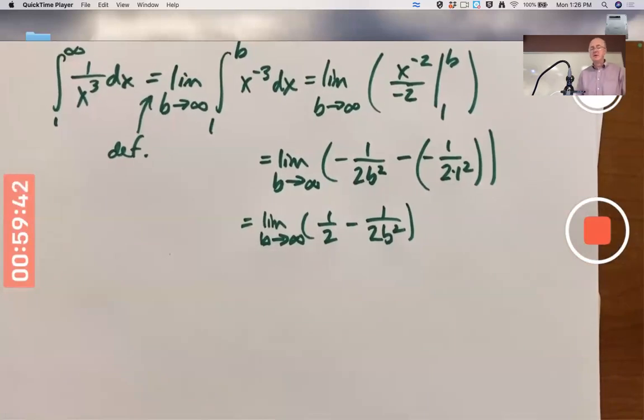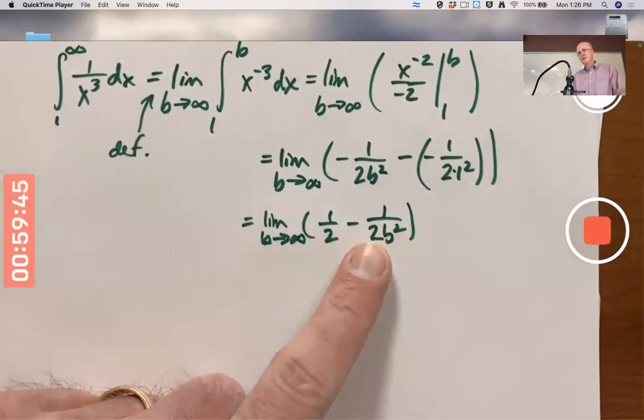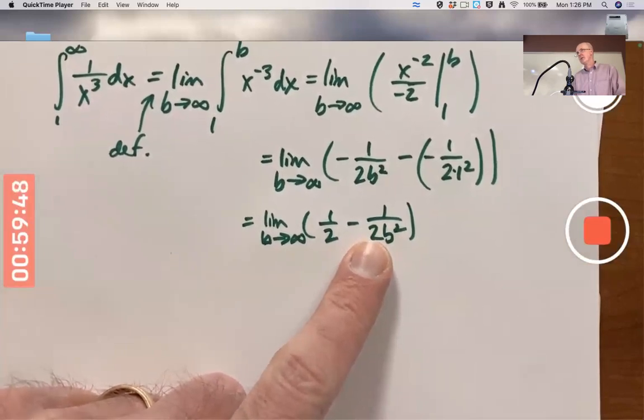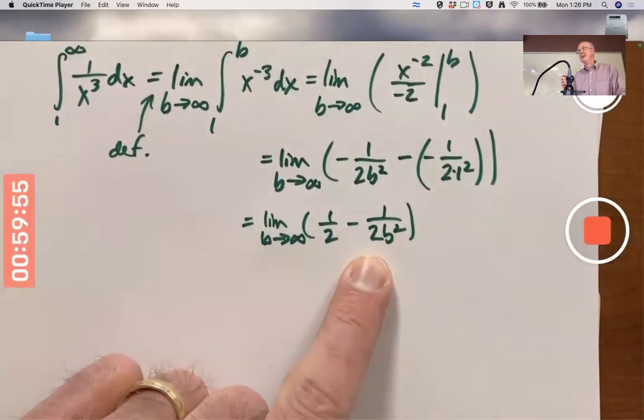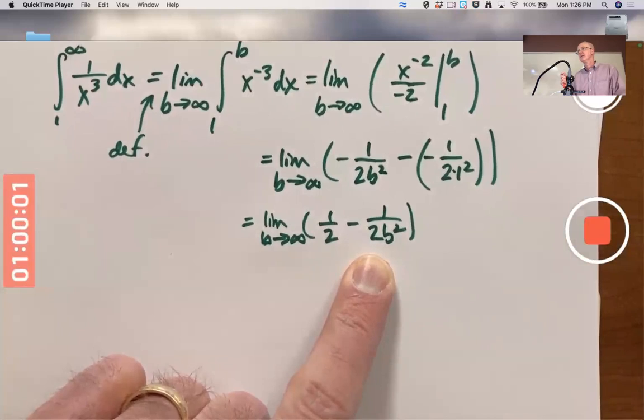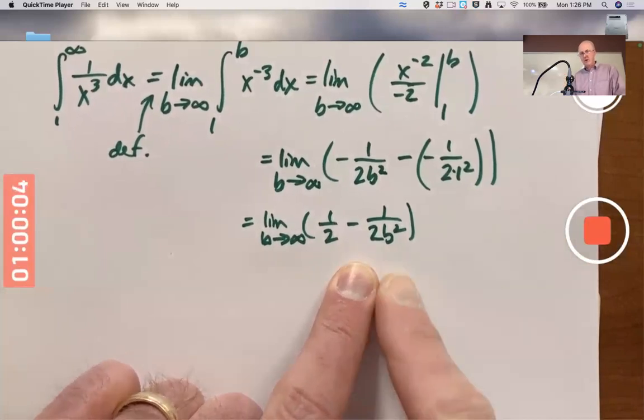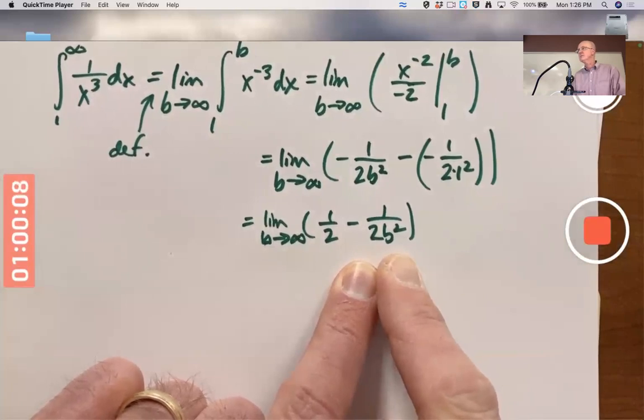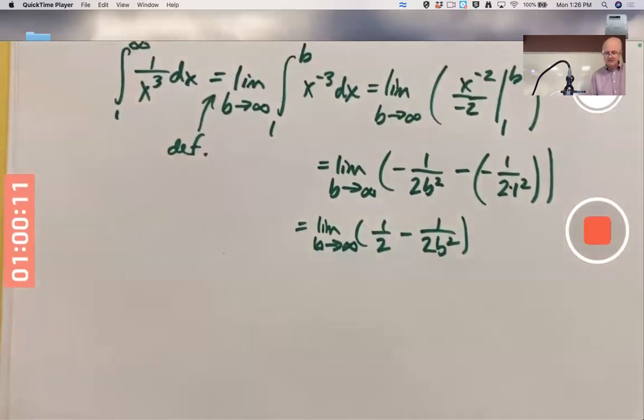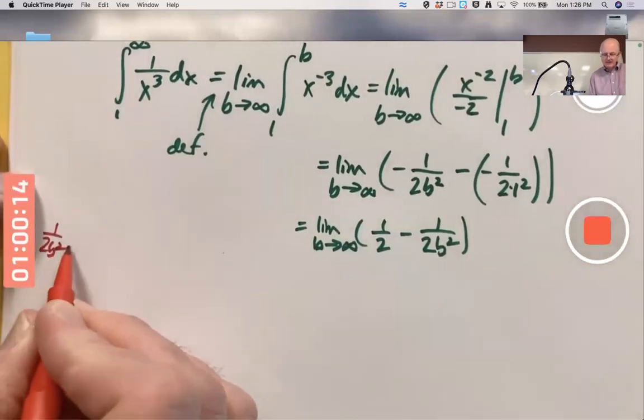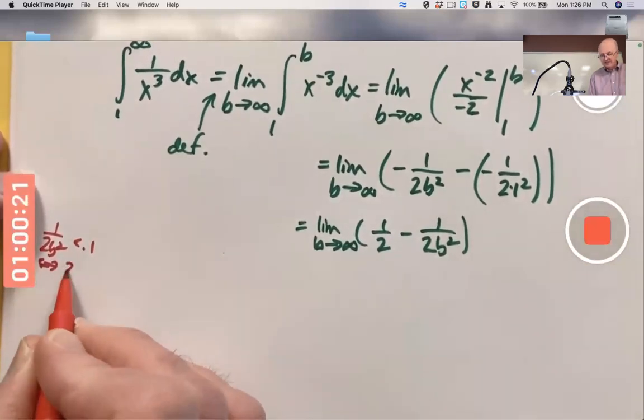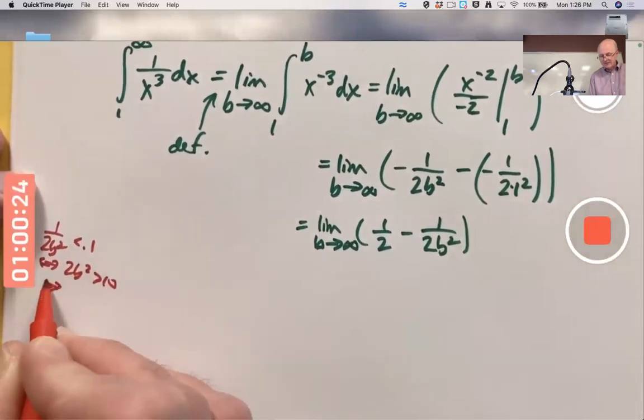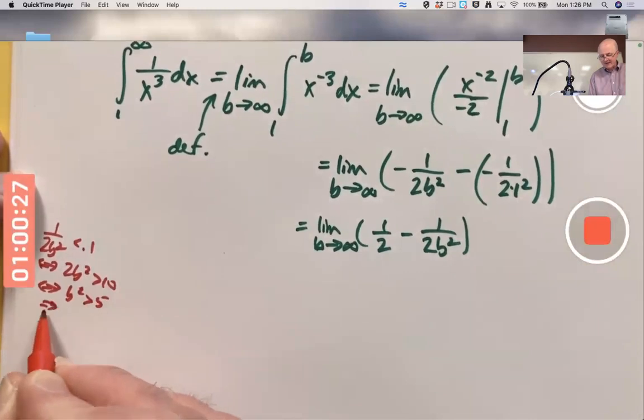And as b goes to infinity, as b gets arbitrarily large, 1 over 2b squared goes to 0. More precisely, 1 over 2b squared can be made as close to 0 as I want by making b big enough. For example, if I want 1 over 2b squared to be less than 0.1, how big does b need to be? That would mean 2b squared is bigger than 10, which means b squared is bigger than 5, which means b is bigger than square root of 5.